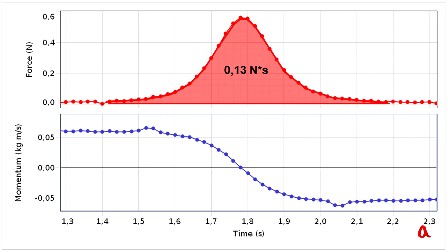The second graph shows how the trolley's impulse changed. We see that it has changed by 0.12 kg per m per second. If we took into account the force of friction, the equation would be exact, because N per second and kg per m per second is the same unit of measurement, recorded in two different ways.